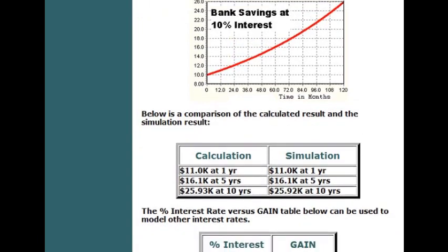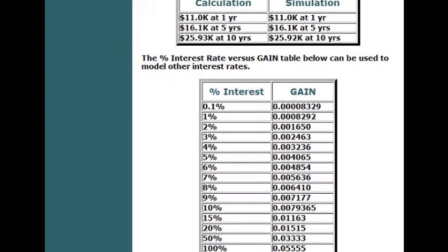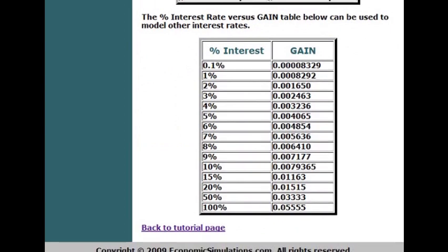Now, if we scroll down a little further, we get our table. This is our table of gain value versus interest rate. So if we want to model 10% interest, we set our gain to this particular number here.